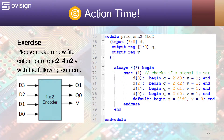The module ports are identical with the ones from prio_enc_1_4_to_2. The sole difference is that in the always block we are going to use a case 1 statement instead of an if-else-if statement. Case 1 means that the case will execute the first line that returns a true condition.